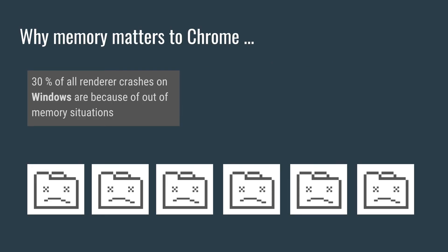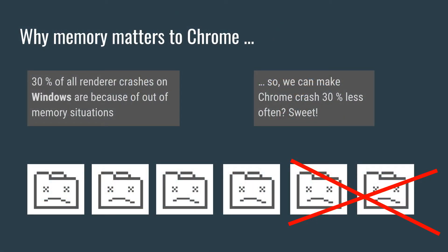Let's take a step back and talk about why memory matters to Chrome at all. It turns out that 30% of all renderer crashes on Windows are because of out-of-memory situations. That's just one of the reasons why we care about memory — one that users actually experience. But on the other hand, it's also an opportunity, because we could reduce the amount of crashes by 30% too. And that's sweet.